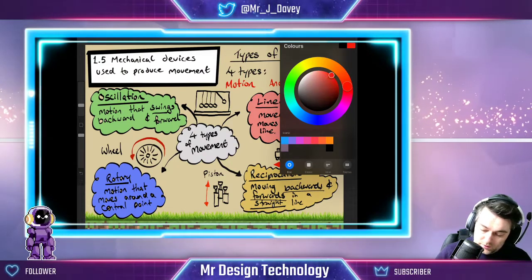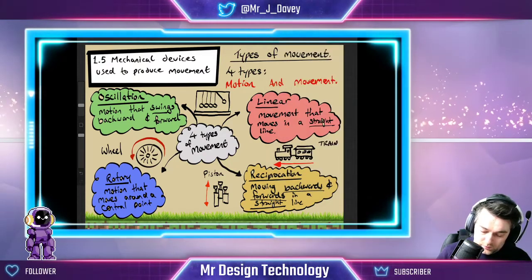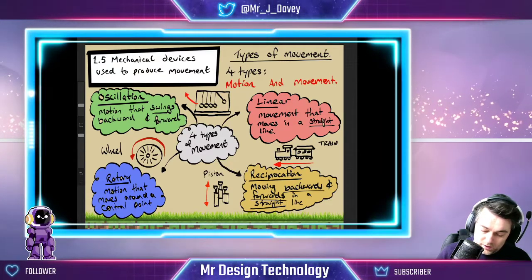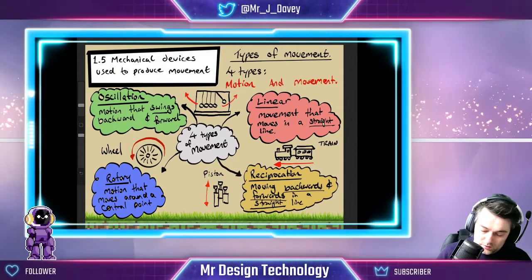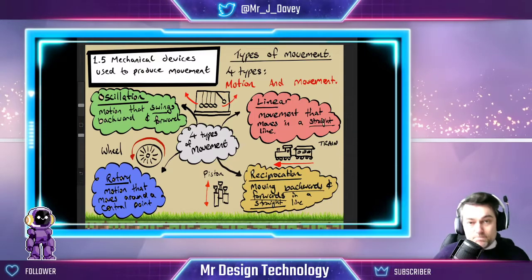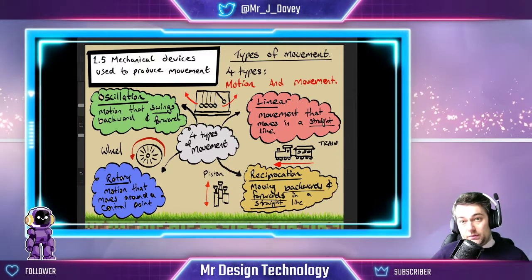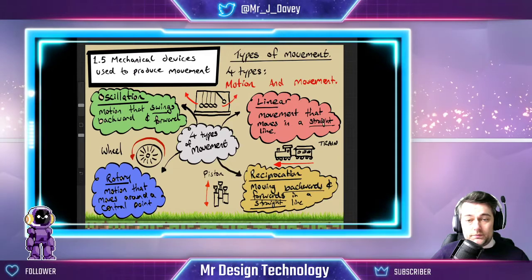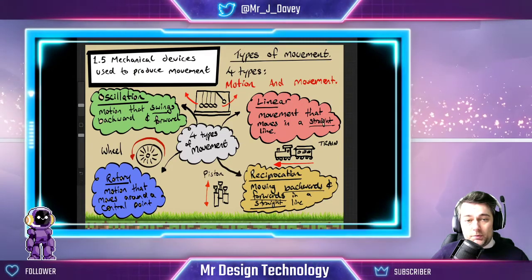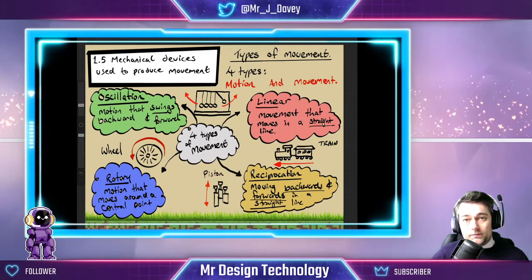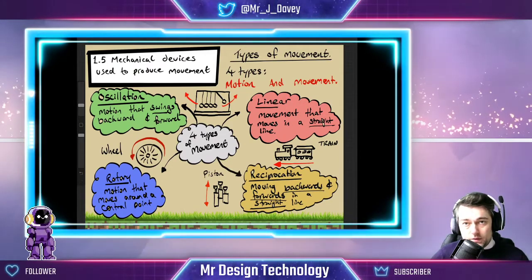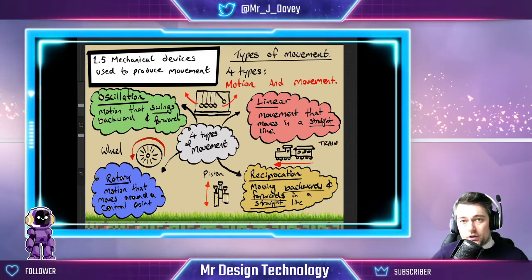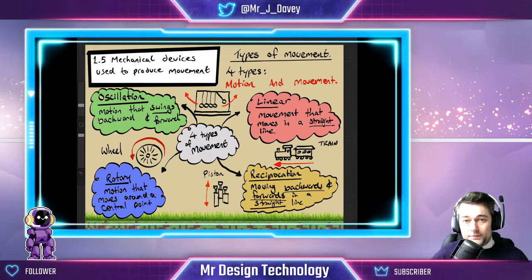I'll draw a little picture to represent oscillation and add the arrow showing the swinging movement. You don't have to use these examples — you can of course use your own — but these examples give you a clear picture of what those movements are actually doing.